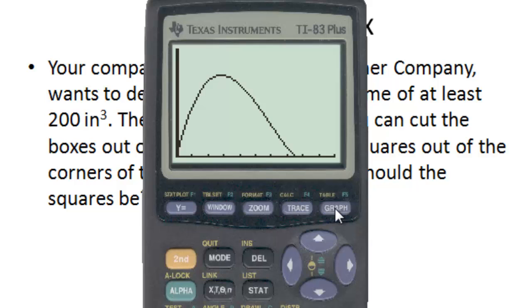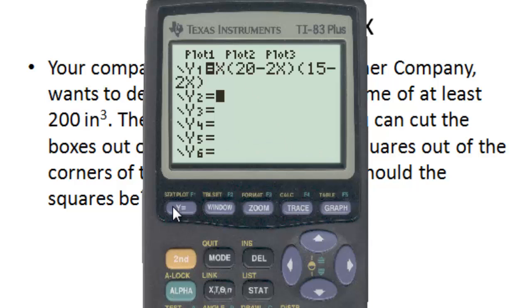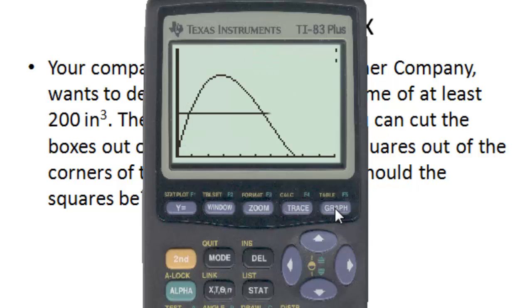We want the volume to be at least 200. To get that, we're going to make a second line and make y equals 200. We're going to graph that, and now we get a nice line that is 200. Everything above that line that's on the graph here, all of this, the volume will be bigger than 200. So we need to find that point and we need to find that point. The way we find those is the intersection.